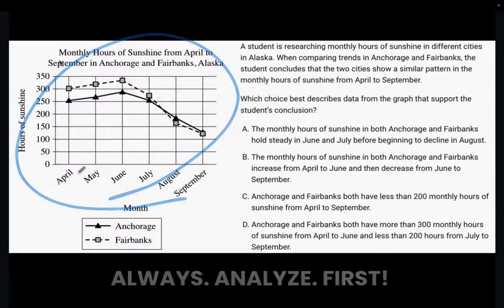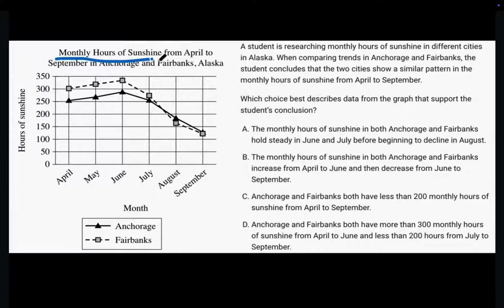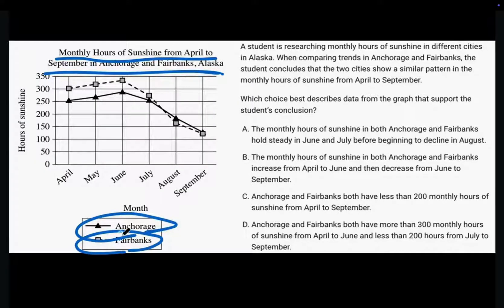On top of the graph, it says it's about the monthly hours of sunshine from April to September in Anchorage and Fairbanks, Alaska. On the left it shows the number of hours of sunshine, and at the bottom it shows each month. The triangle patterns represent Anchorage and the square patterns represent Fairbanks.